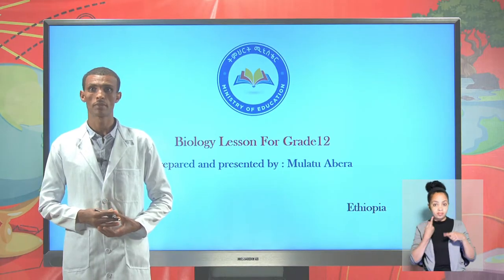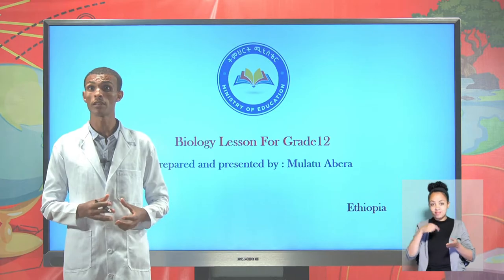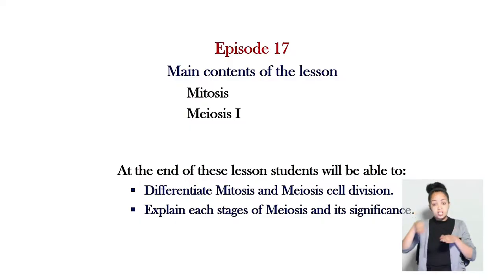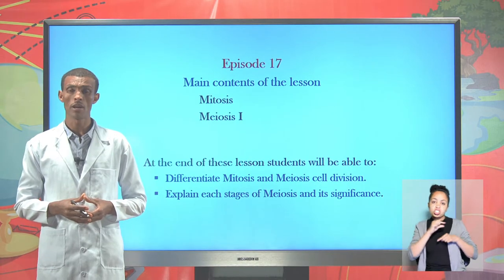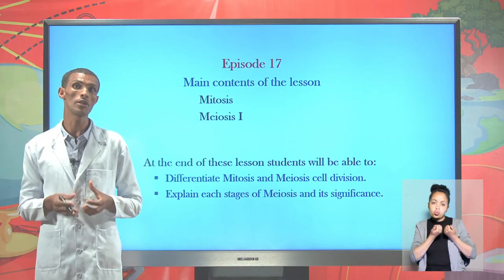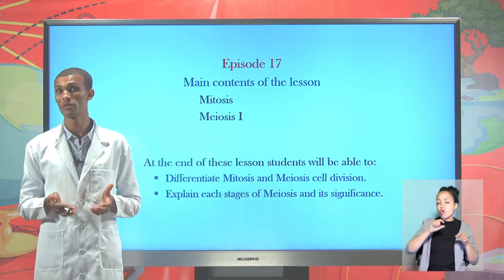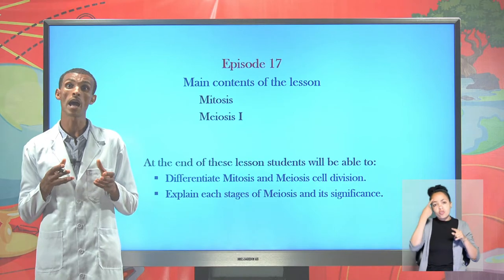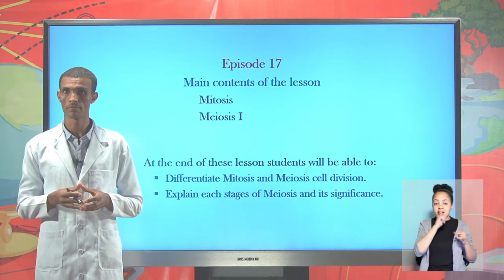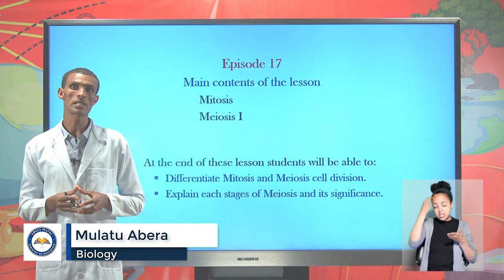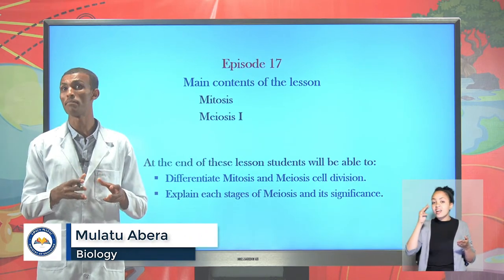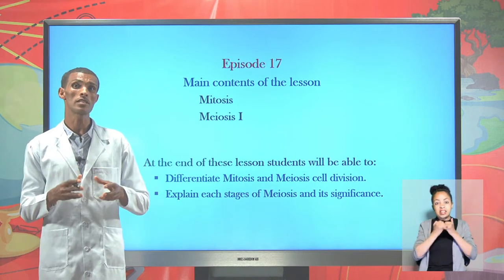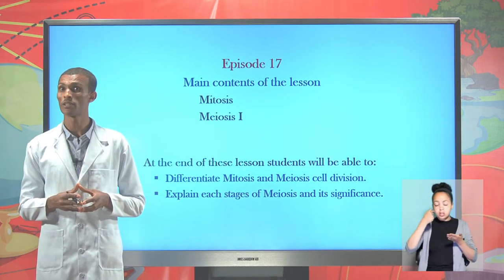Welcome to today's lesson. This is a biology lesson for grade 12 students. In our last lesson we were seeing Mendelian genetic cross and how to calculate genotype and phenotype for monohybrid and dihybrid cross. In today's lesson we will see mitosis and meiosis one.